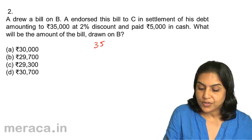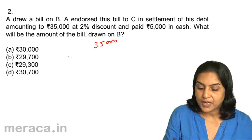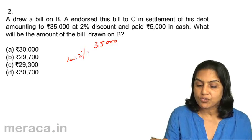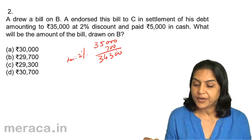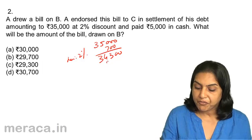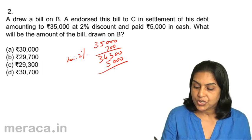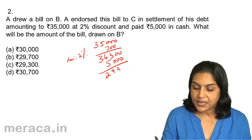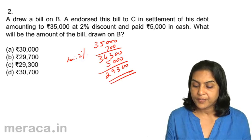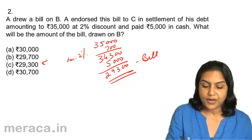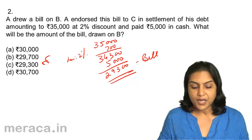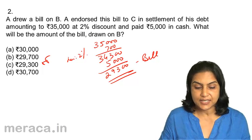C's debt was $35,000. Less 2% discount allowed, that is $700. So you have $34,300. And he paid $5,000 in cash. So the amount is $29,300. Therefore, the amount of the bill should be $29,300. Right answer: $29,300.